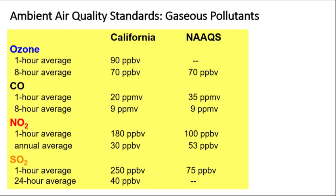Other pollutants have their own unique standards and averaging times. For example, nitrogen dioxide has both a one-hour standard and an annual average standard. The annual NO2 standard of 53 parts per billion at the NAAQS level is designed to guard against long-term chronic health effects, while hourly standards are more stringent and can guard against both short- and long-term health effects. If concentrations are lower than a one-hour standard every hour of every year, then both acute and chronic health effects are guarded against.